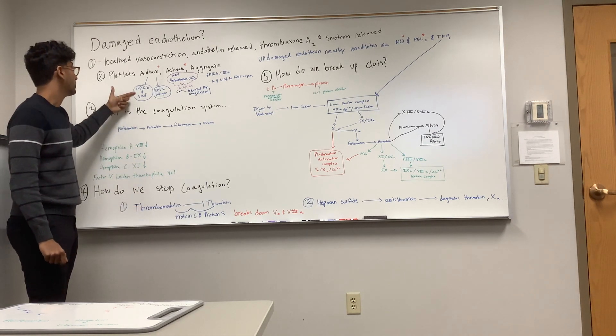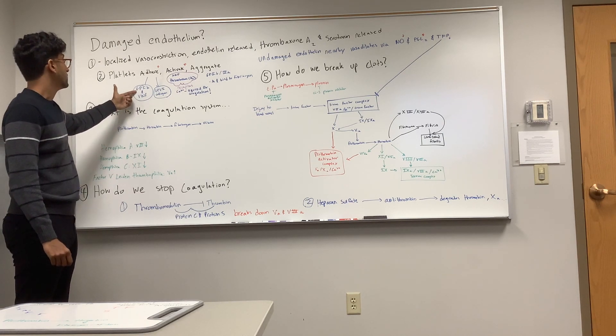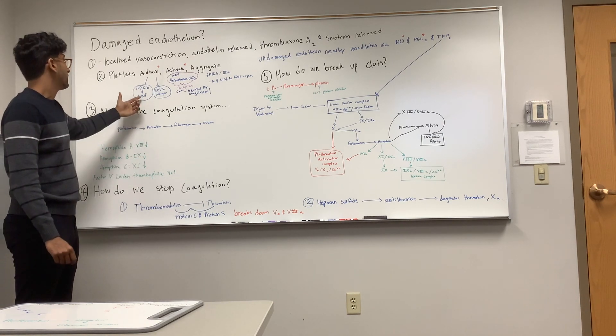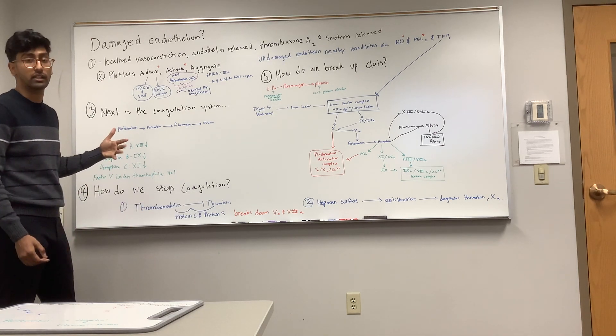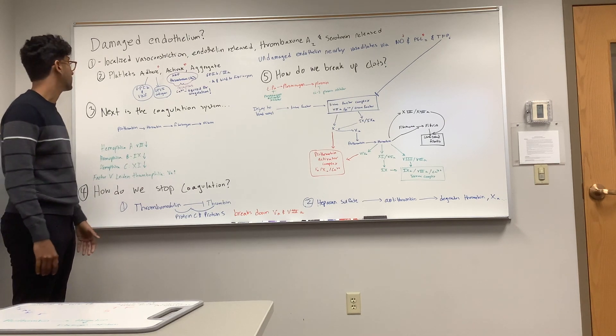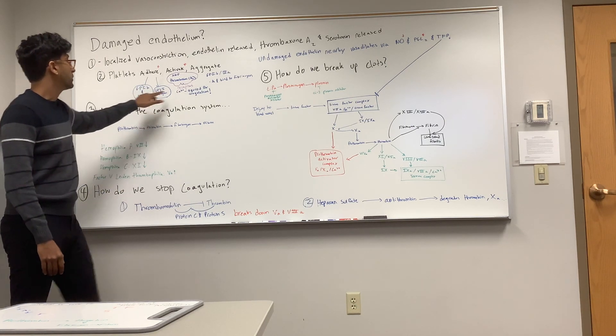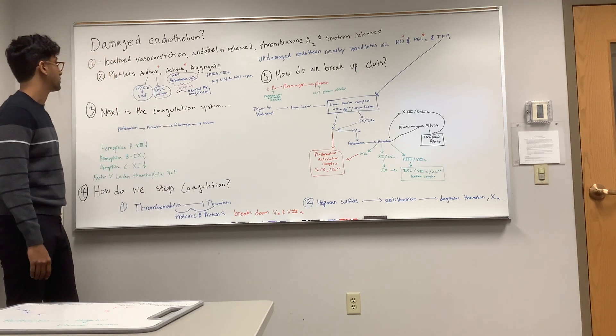The way I remember this is 'game plan.' GP stands for game plan—glycoprotein receptor 1B. Von Willebrand factor stands for Von Miller, so for the game plan you want to have Von Miller because he's a future Hall of Fame football player. And 1 plus 2 plus 3 is going to give me 6, so that's one way you can remember all those receptors.